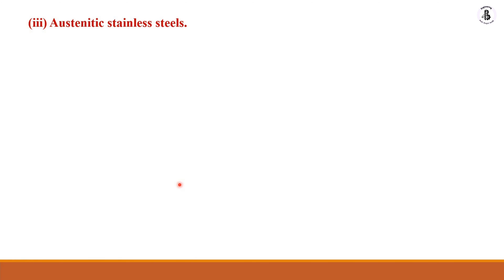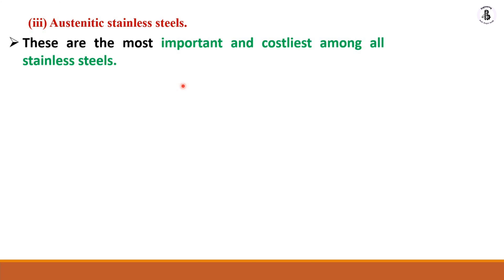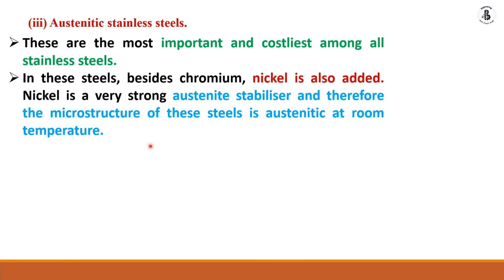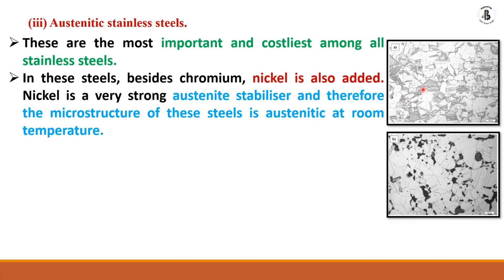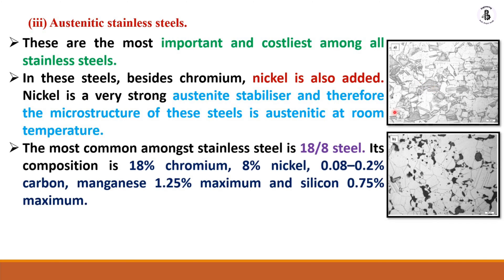The third type is austenitic stainless steel, where the austenitic phase is present. Austenite is a soft phase and this is the most important and costlier among all stainless steel materials. Besides chromium, nickel is also added because nickel is a very strong austenite stabilizer. As you can see in the microstructure, the austenite phase is present — austenite appears in gray or black colors in the structure. The most common among austenitic stainless steels is 18/8 steel, with 18 percent chromium and 8 percent nickel.